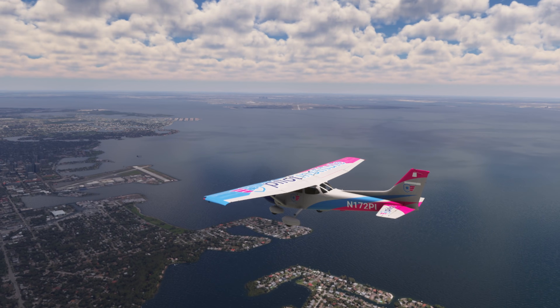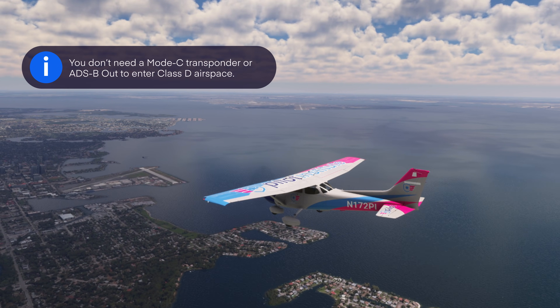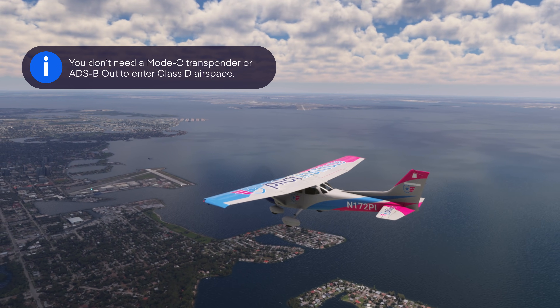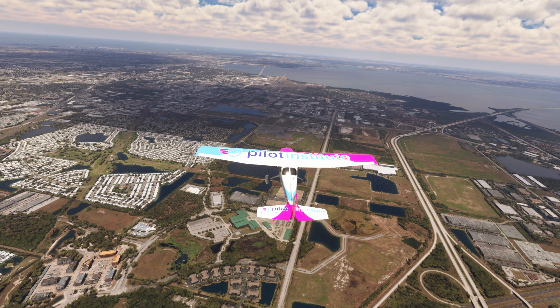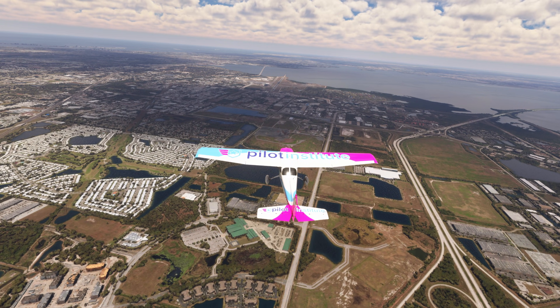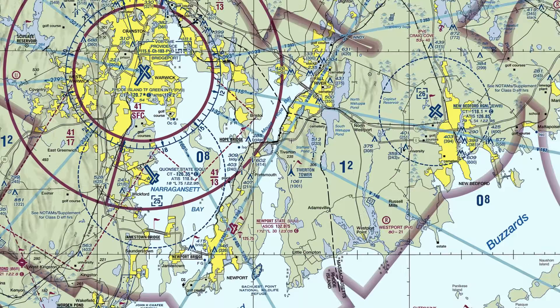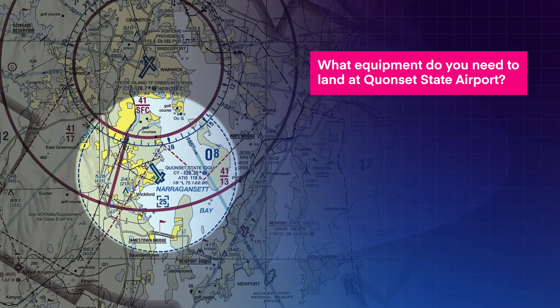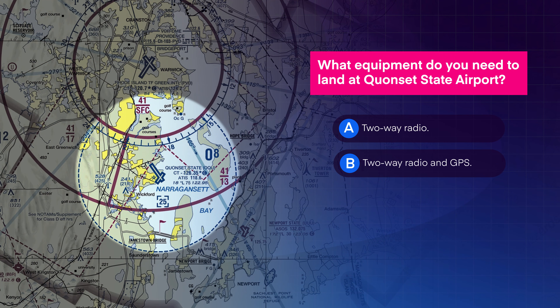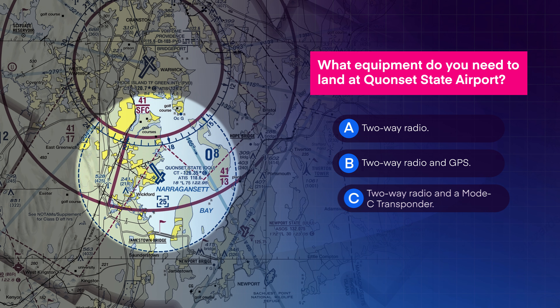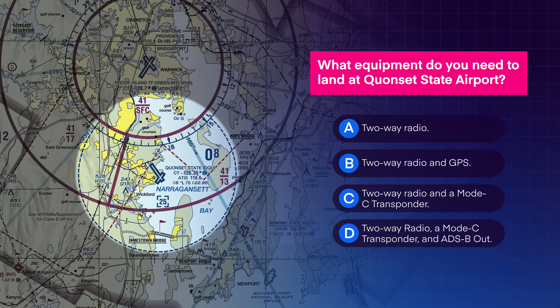Unlike Class B or Class C, you don't need a Mode C transponder or ADS-B out. But many Delta towers receive a radar feed from nearby approach control, so if you don't have a transponder, you won't show up on their screen and they'll probably ask why they can't see you. Quiz time: what equipment do you need to land at Hanscom State Airport? The answer is a two-way radio, a Mode C transponder, and ADS-B out.